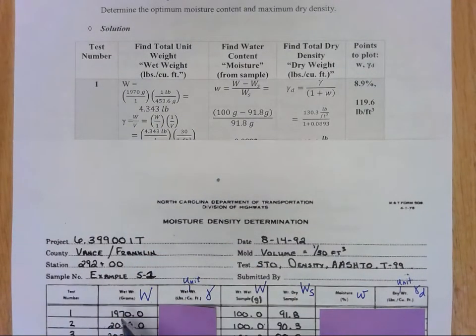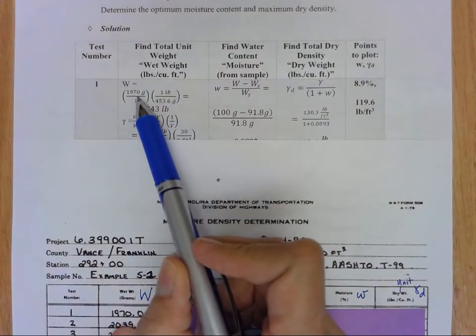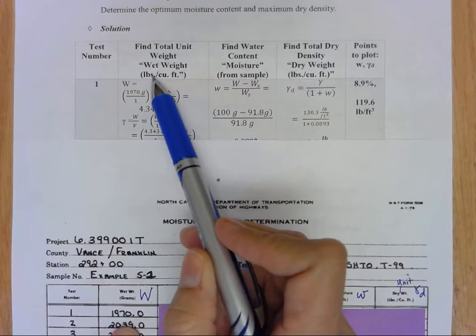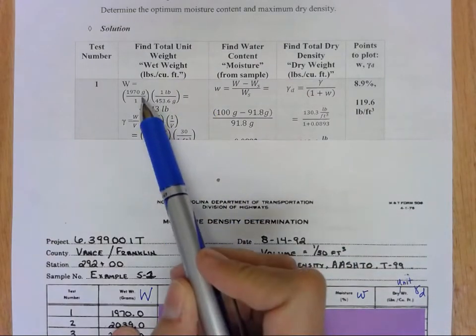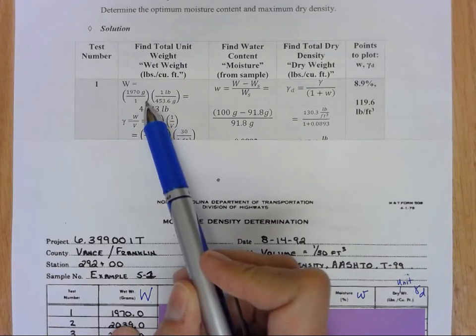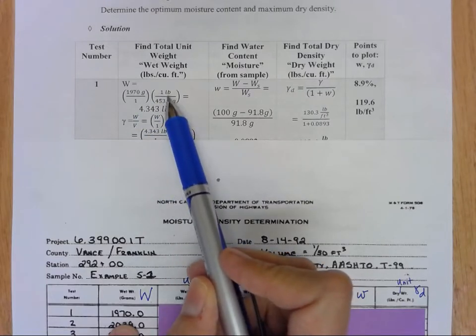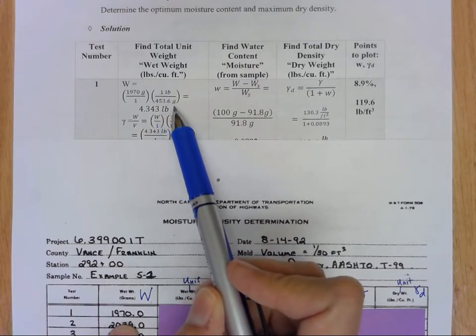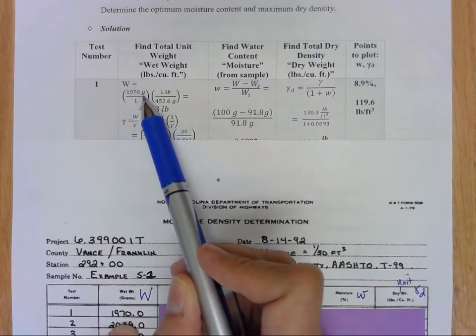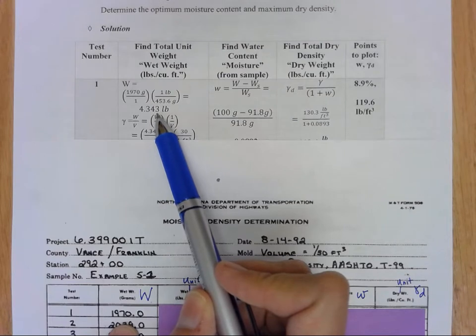In test number one we're starting off with this 1970 grams of this total weight that was given to us but we want to find the total unit weight. So in order to do that the first thing we're going to do is convert that grams to pounds and so we talked about that unit conversion rate and that will be given to you: one pound is equal to 453.6 grams. So you'll need to take that total amount of grams and divide it by that conversion rate and you get 4.343 pounds.